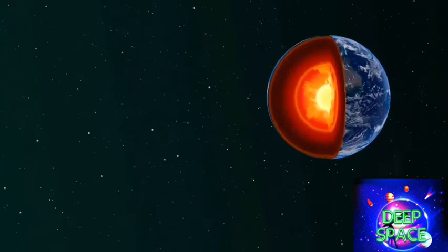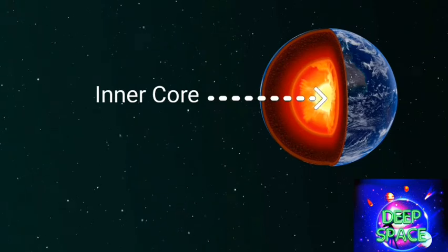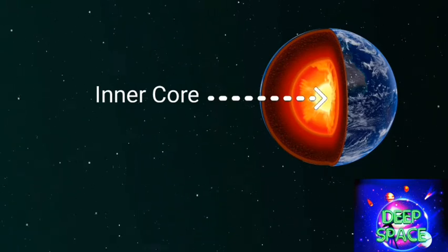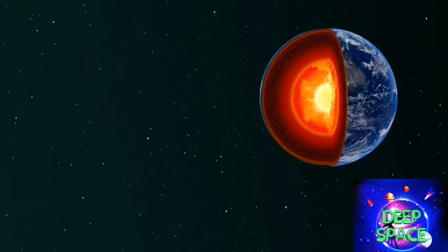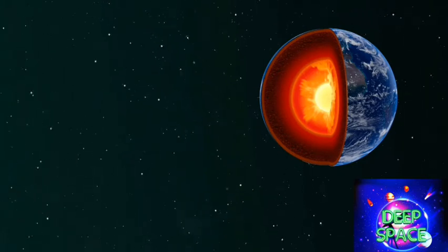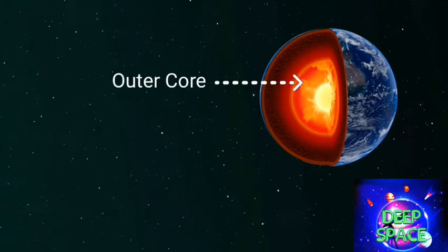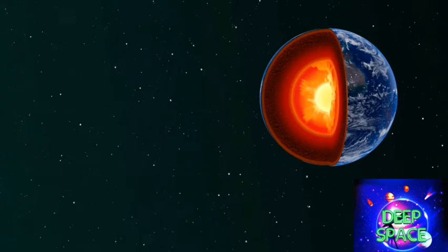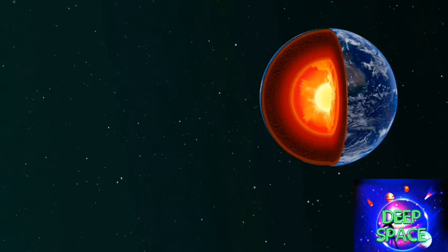Earth is composed of four main layers, with an inner core at the planet's center. The inner core is a solid sphere made of iron and nickel metals, about 1,221 kilometers in radius. Surrounding the inner core is the outer core, a layer about 2,300 kilometers thick, made of iron and nickel fluids.